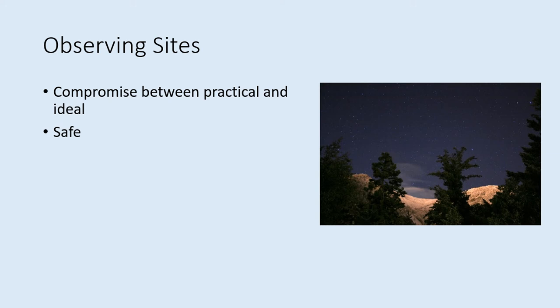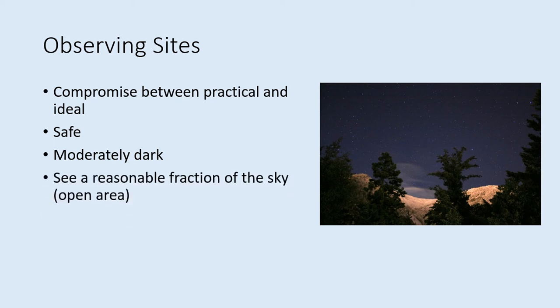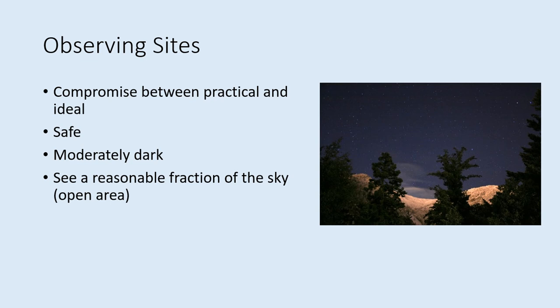Don't trespass or go into places that aren't open to visitors. You should try to avoid places where there are bright lights shining in your eyes — you won't be able to see the stars unless you can get your eyes used to darkness. Sometimes, if you can find a moderately dark area like a park, a conveniently located tree can block out the nearest light sources. You also want to be able to see a reasonable fraction of the sky. If you're around a lot of tall buildings or trees, you may not be able to see much. An open area like a playing field, park, or even a parking lot — provided it's safe and doesn't have many lights — can work.